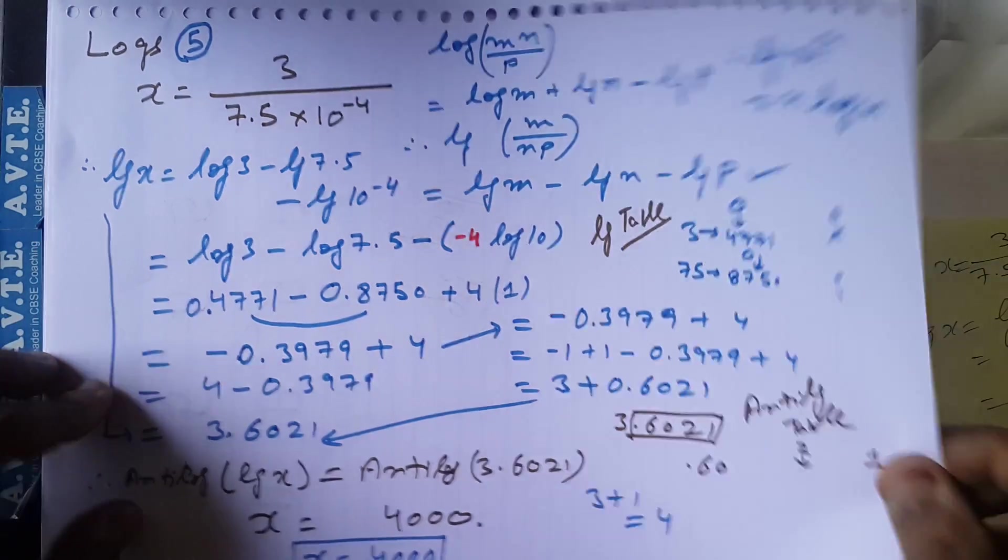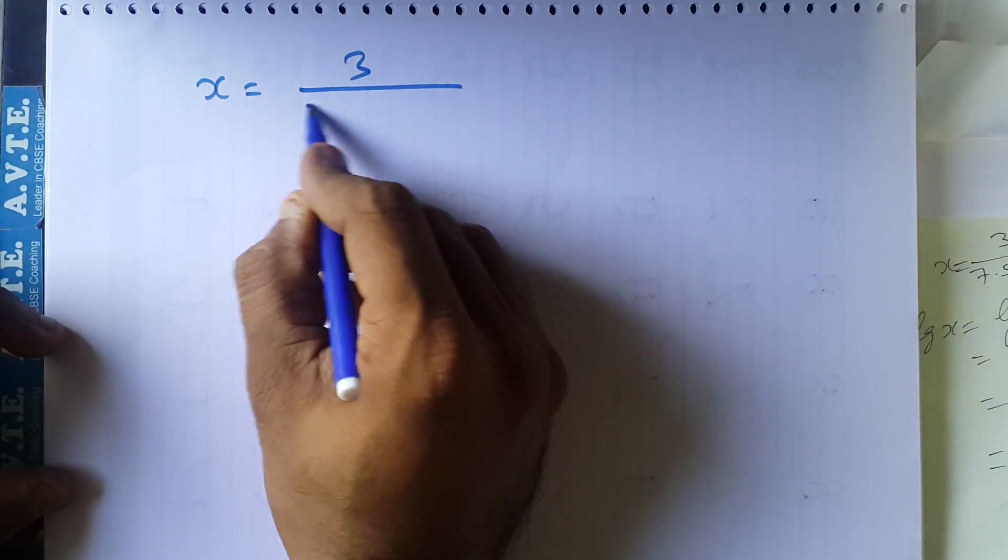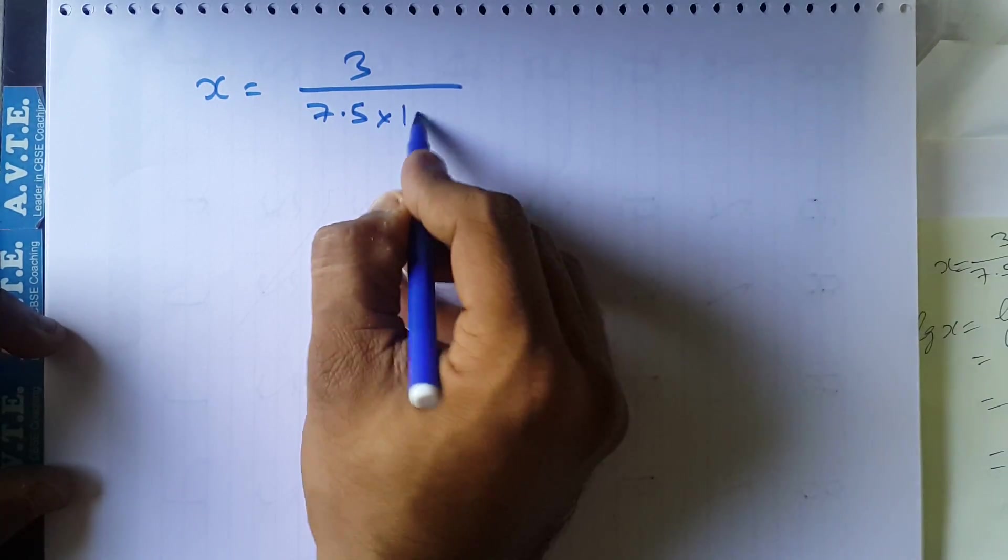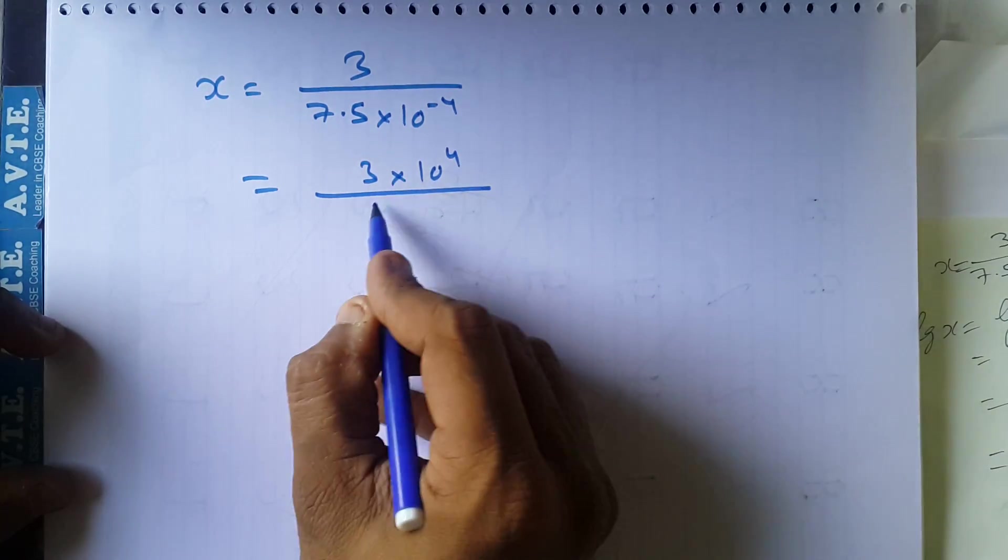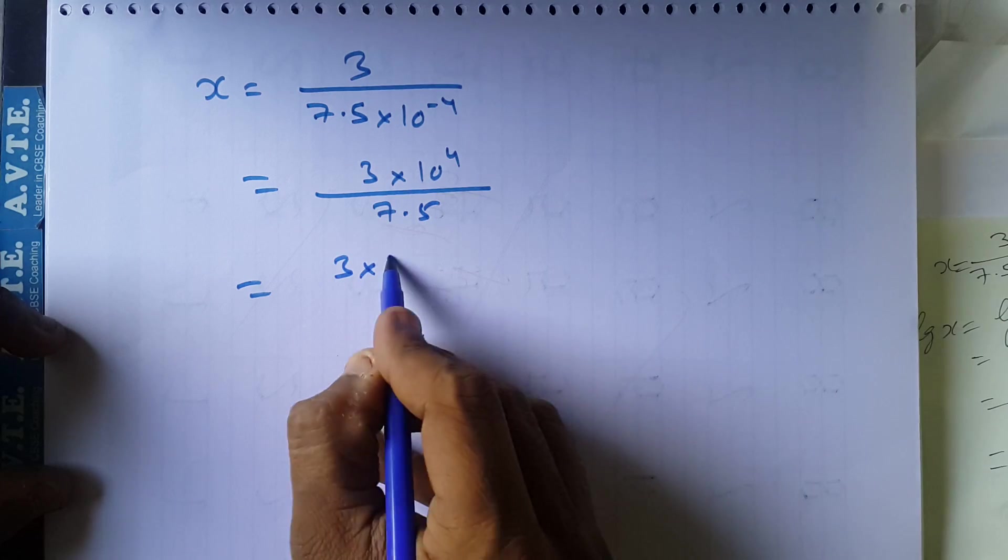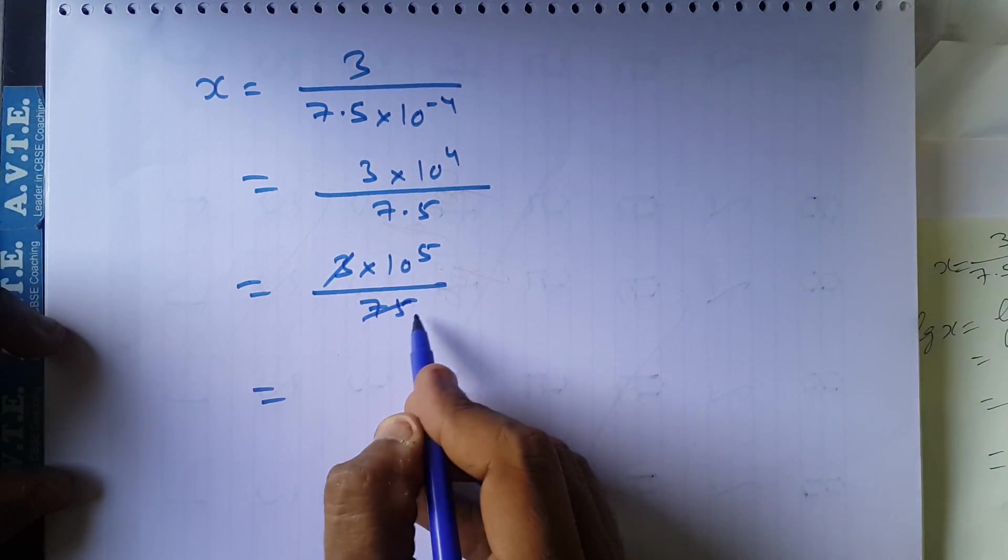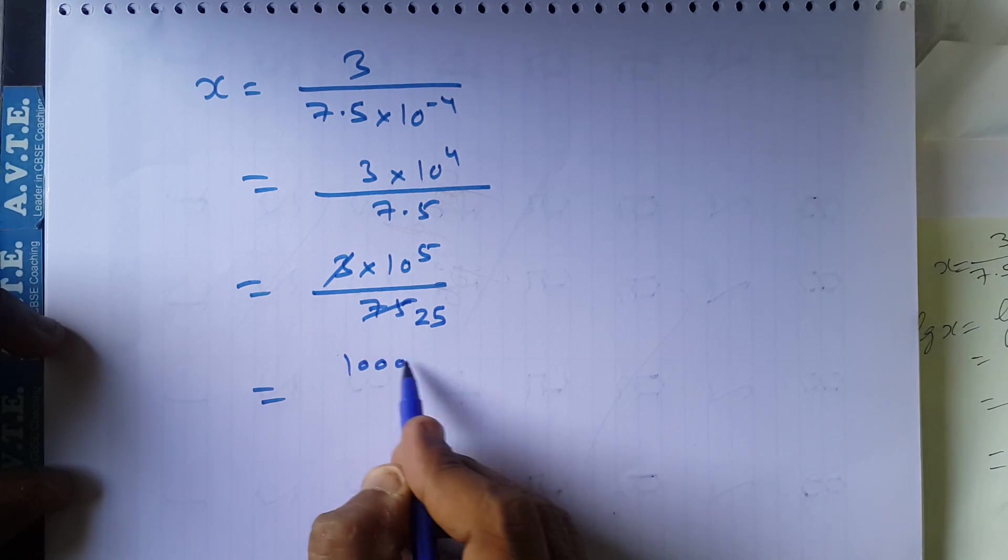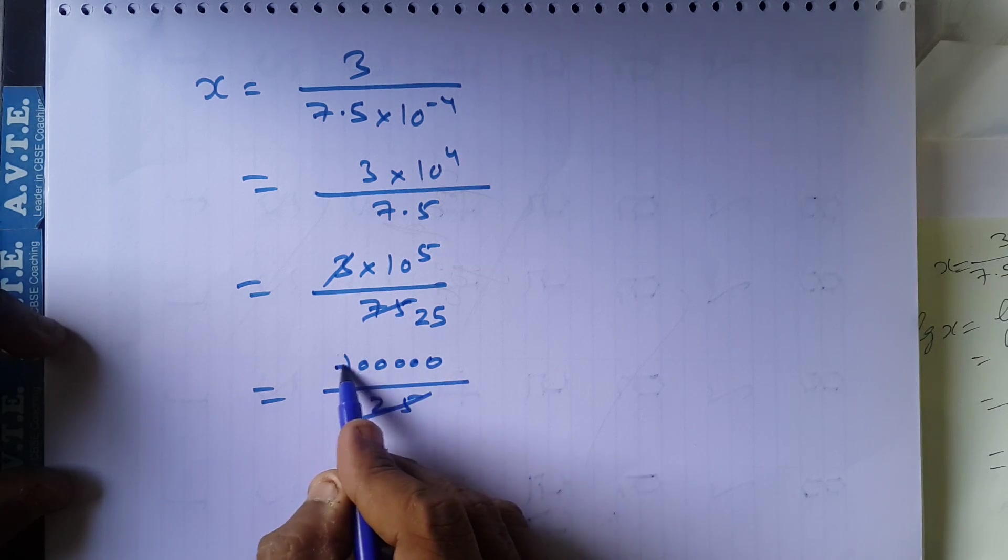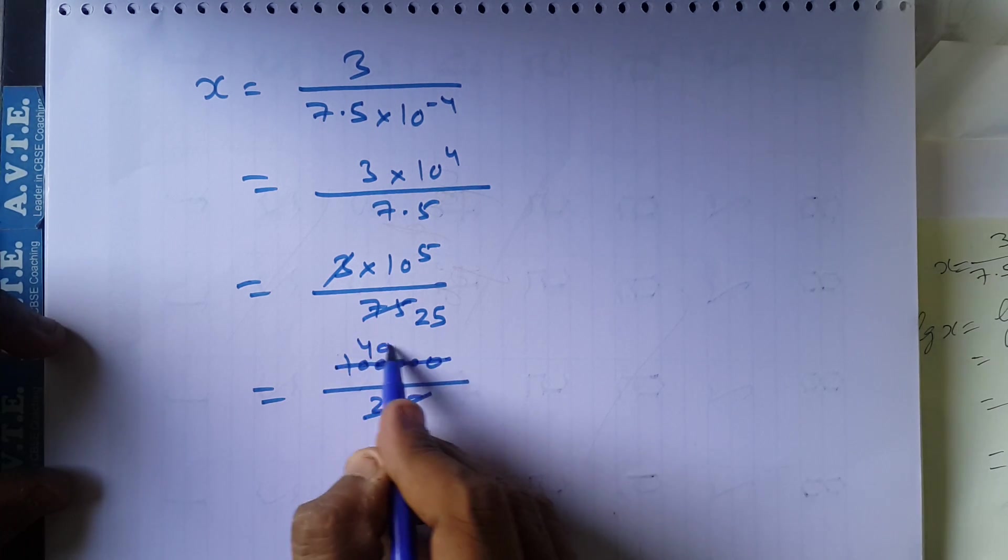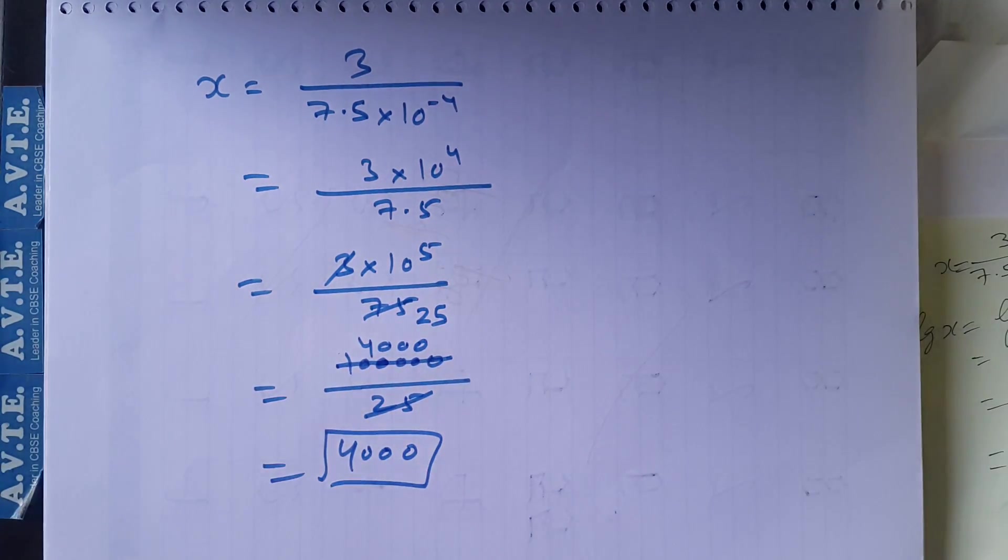Now I'll tell you how important the log is. If you take number x equals 3 upon 7.5 times 10 raised to the power minus 4, this is 3 times 10 raised to the power minus 4 upon 7.5. So it is 3 times 10 raised to the power minus 5 upon 7.5, which is 10000 upon 25. If you cut 25 into 100 is 4000, and your answer is 4000.